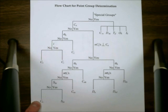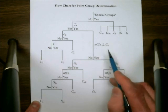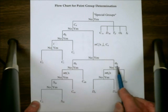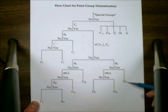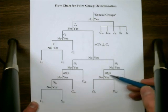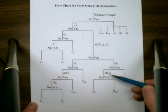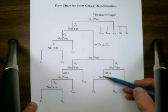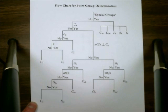If we have those dihedral axes, we're on the D branch. Again, look first for the horizontal mirror plane perpendicular to Cn — if found, it's DnH. If not, look for N vertical mirror planes (called sigma-D by convention in the D branch). If those N sigma-Ds are found, the group is DnD. If not, it's Dn — a totally rotational group.